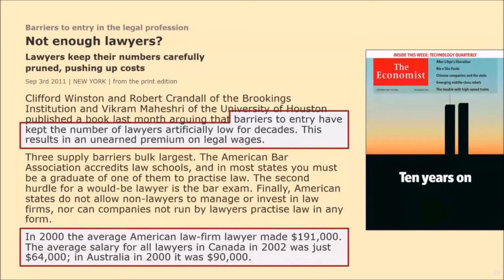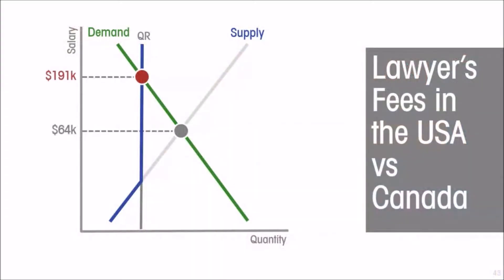Nor can companies not run by lawyers practice law in any form. Now many of these restrictions exist in other countries as well, but in combination they are greater in the United States than in even other developed countries. The result is that the average American law firm lawyer earns $191,000 a year. The average salary that corresponds to that in Canada was just $64,000. In our model, this looks like the quantitative restriction being more severe in the United States, resulting in $191,000 as the price of a lawyer in the United States, compared to $64,000 in a country where that quantitative restriction does not apply.